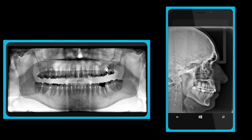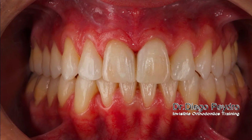This is the final position of the roots and the X-rays taken before removing the mini-screw. You can see the good position of the roots achieved in the case, the good torque in the incisors, in balance with the face of the patient. This is the final result of the case, with a perfect occlusion — we centered the midlines.